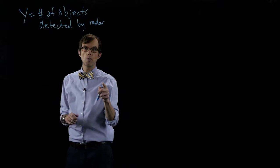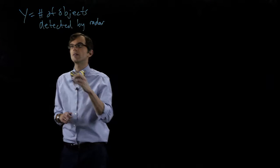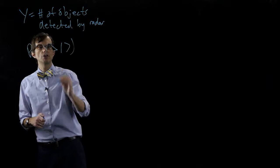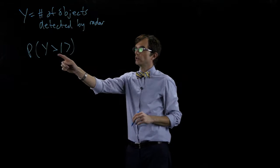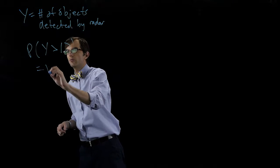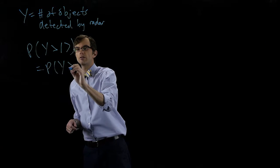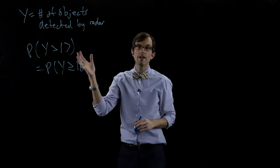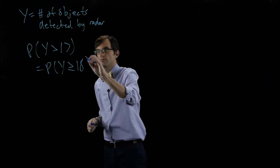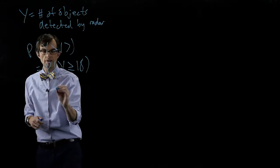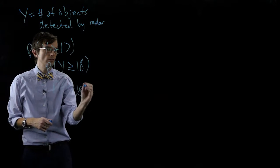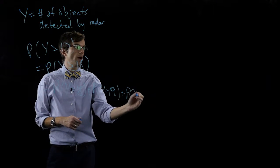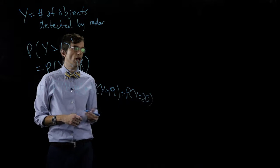We want to know: what's the probability that Y is greater than seventeen? We're not including seventeen here, so that would be equal to the probability that Y is greater than or equal to eighteen. More than seventeen is eighteen or more. So that's the probability that Y equals eighteen, plus the probability that Y equals nineteen, plus the probability that Y equals twenty — there are twenty total objects.